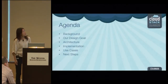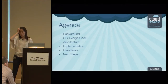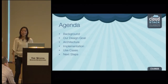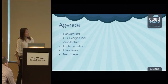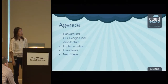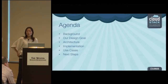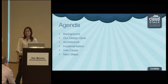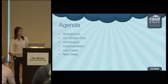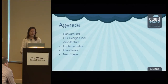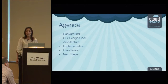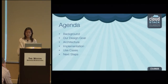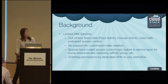This is the agenda for today. First I will describe the background of this project and talk about the limitations of the current CloudStack RBAC system and its drawbacks. Then we'll talk about why we came up with this idea to work on IAM, describe the goals we want to achieve, give a brief overview of the architecture design, then hand over to Prachi for implementation details, use cases, and next steps.